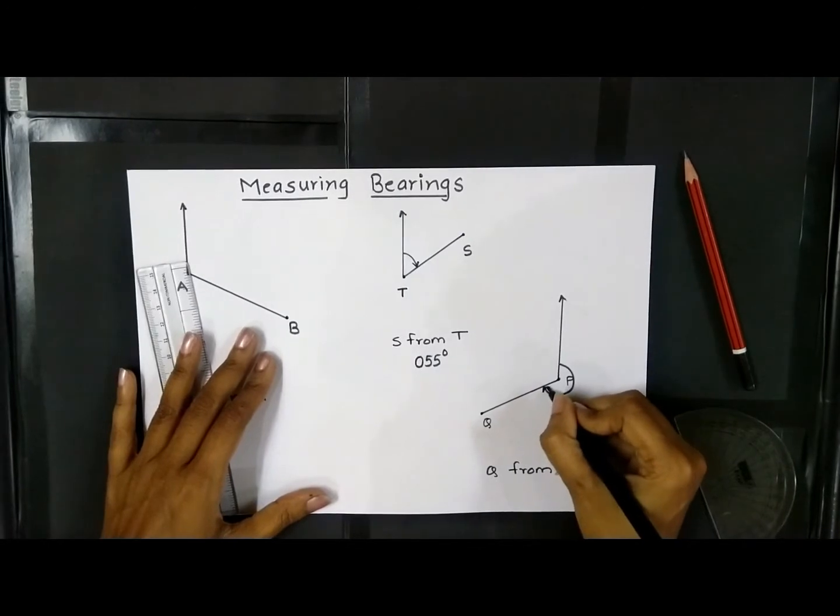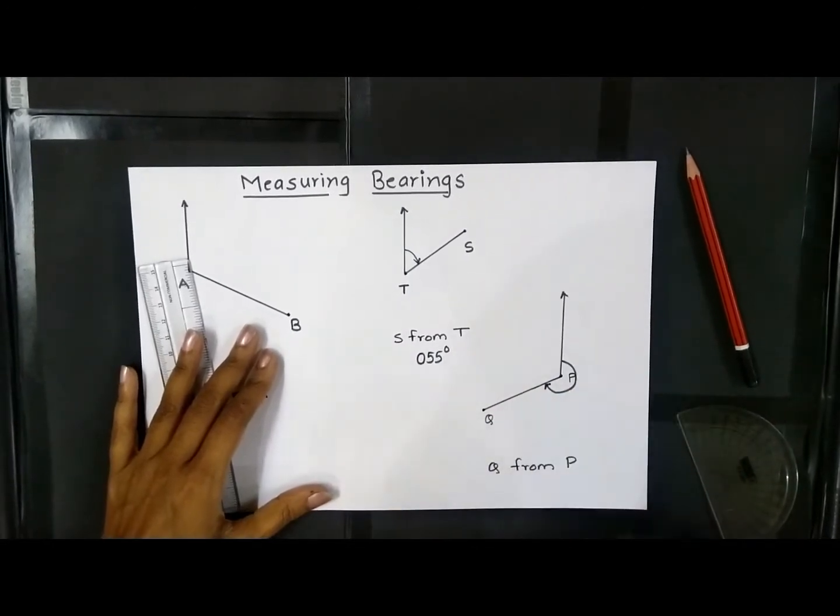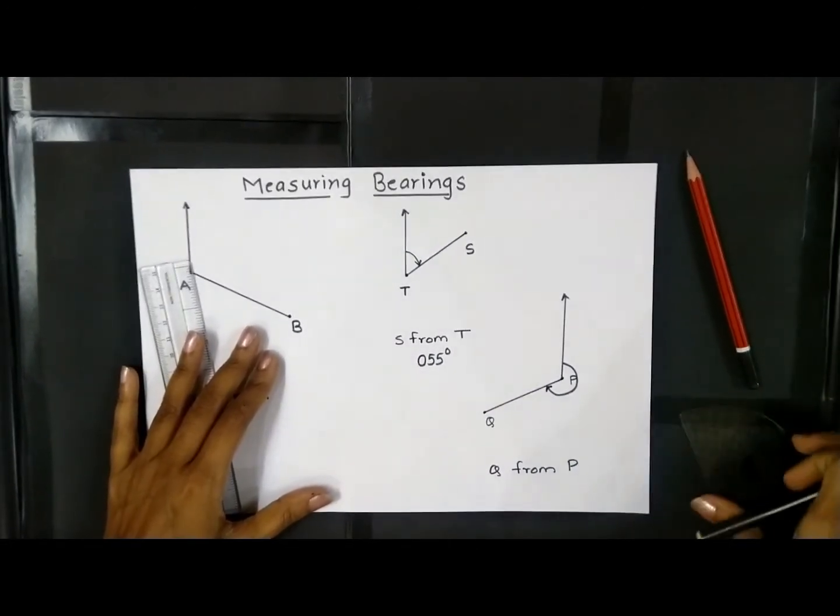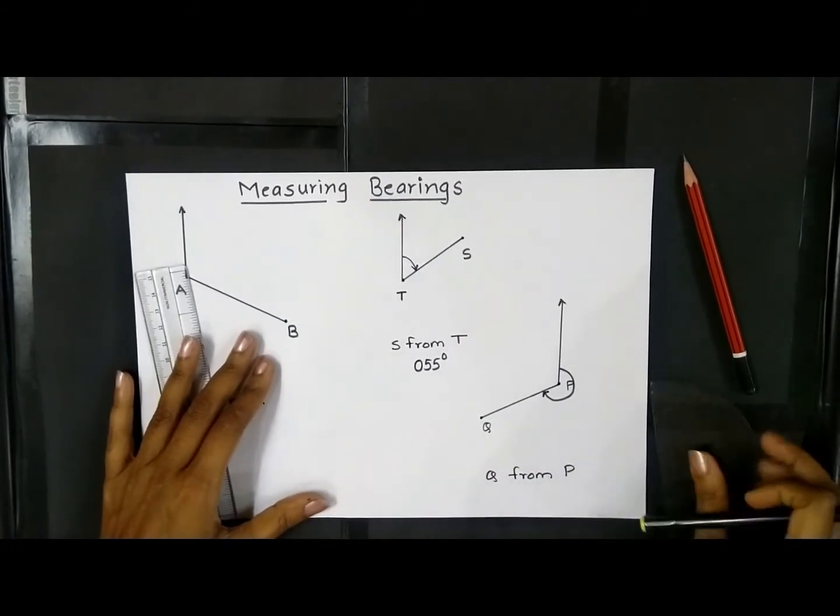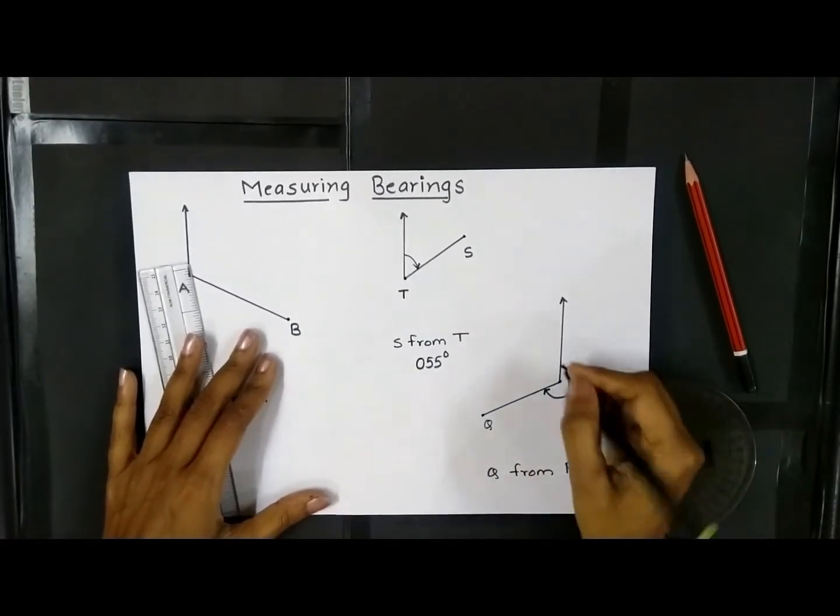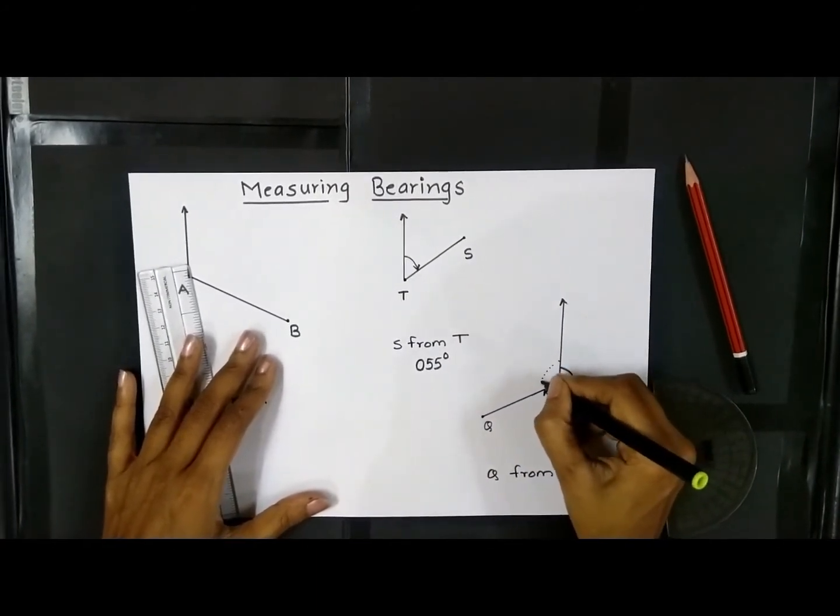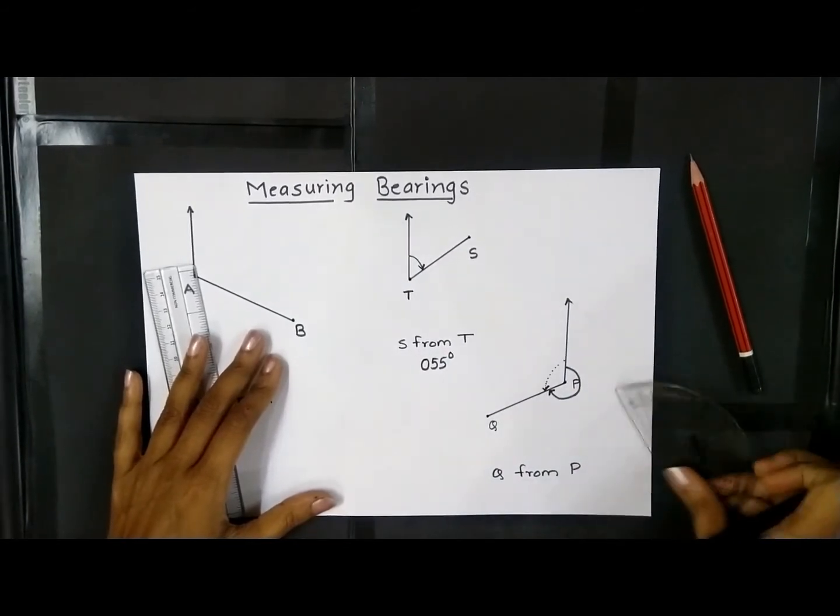This particular angle we have to measure. Now since we only have one protractor, we cannot measure the reflex angle. We will measure this particular angle temporarily in an anti-clockwise direction.